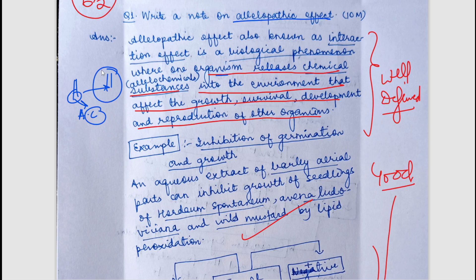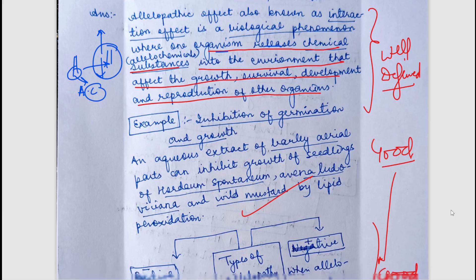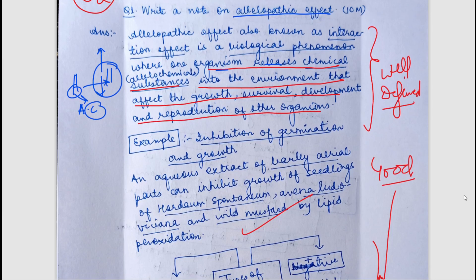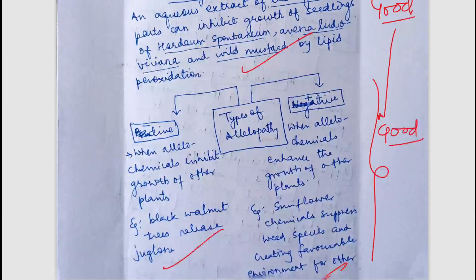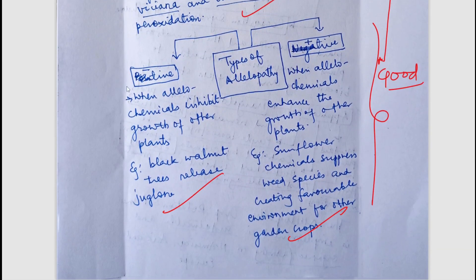Allelopathic effects can be positive or negative — they can enhance the growth of another plant or reduce its growth. The student has mentioned positive allelopathy and negative allelopathy, where positive allelopathy enhances growth and negative allelopathy inhibits growth. Examples have been mentioned. You can pause the video and read the definitions if you want.